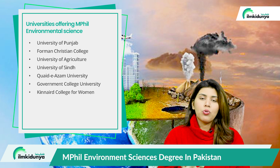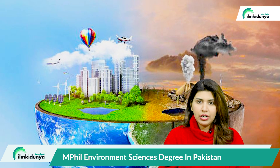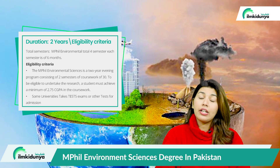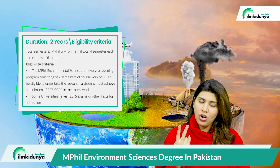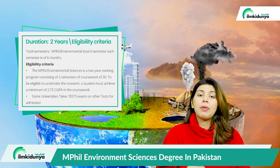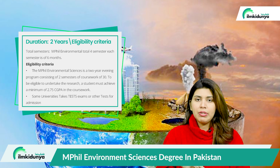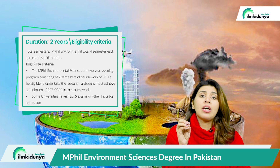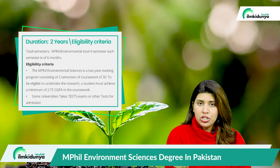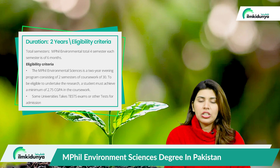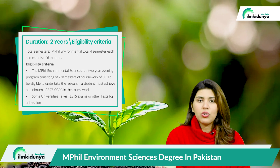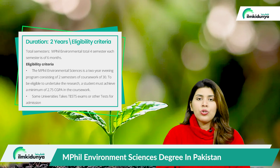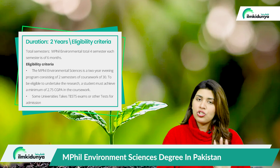You have to take admission in these universities for MPhil. The duration is 2 years — MPhil is also 2 years, though sometimes it seems like 1.5 years. The research work duration can be more. Sometimes it is 1 year coursework and 1 year research work. In total it is 4 semesters, each semester being 6 months.